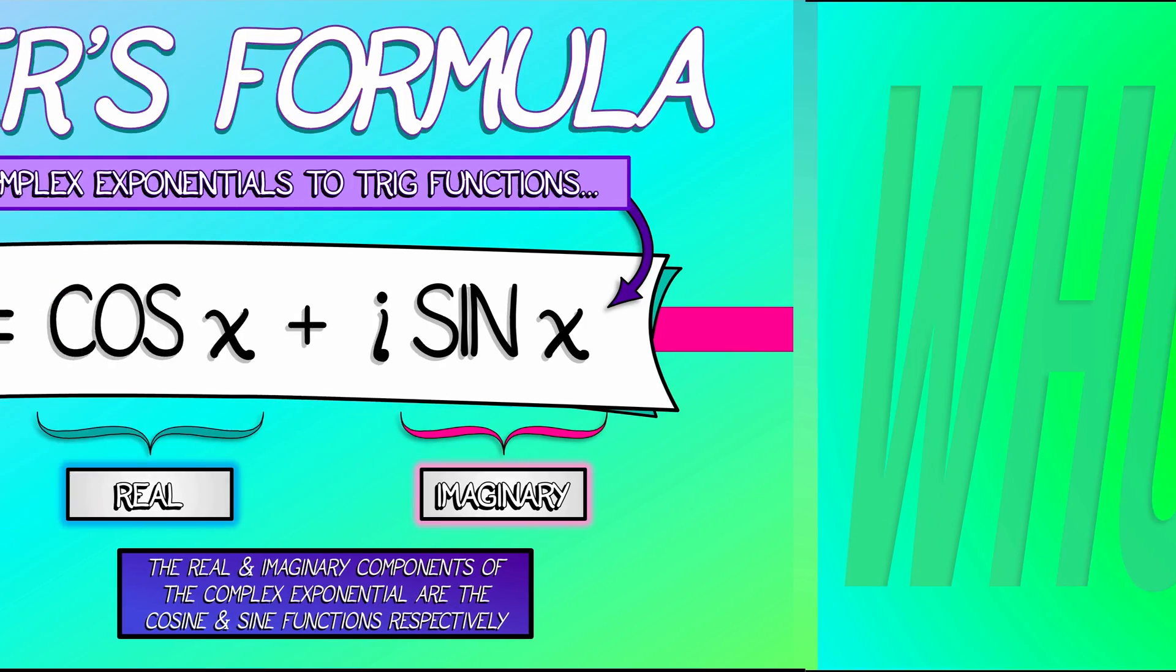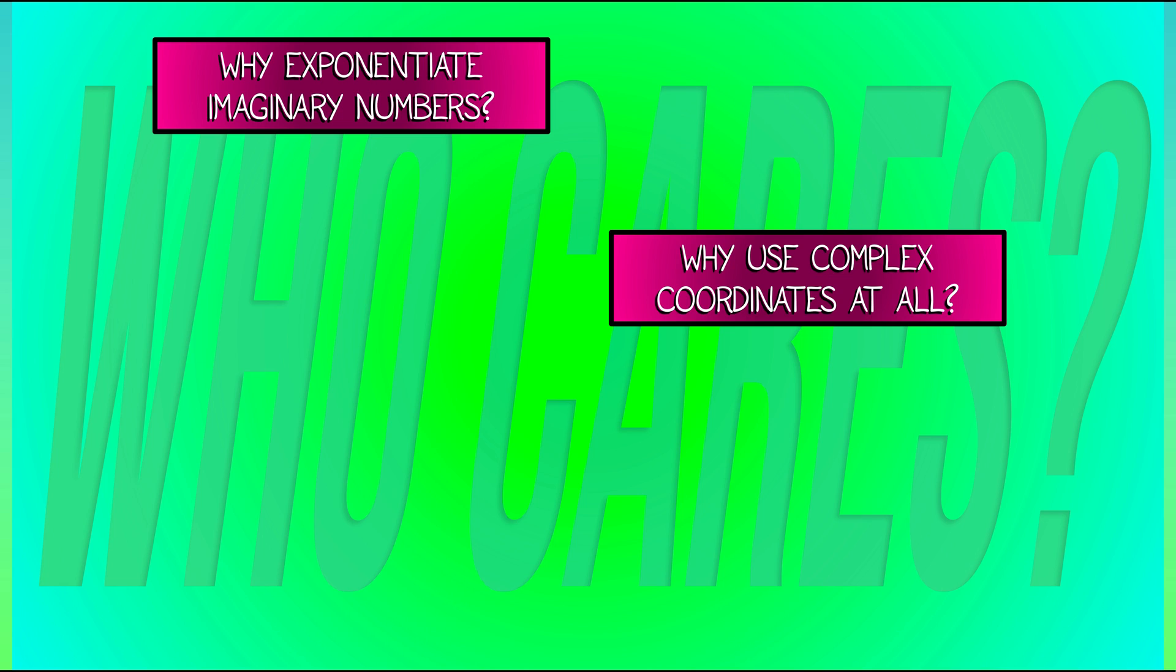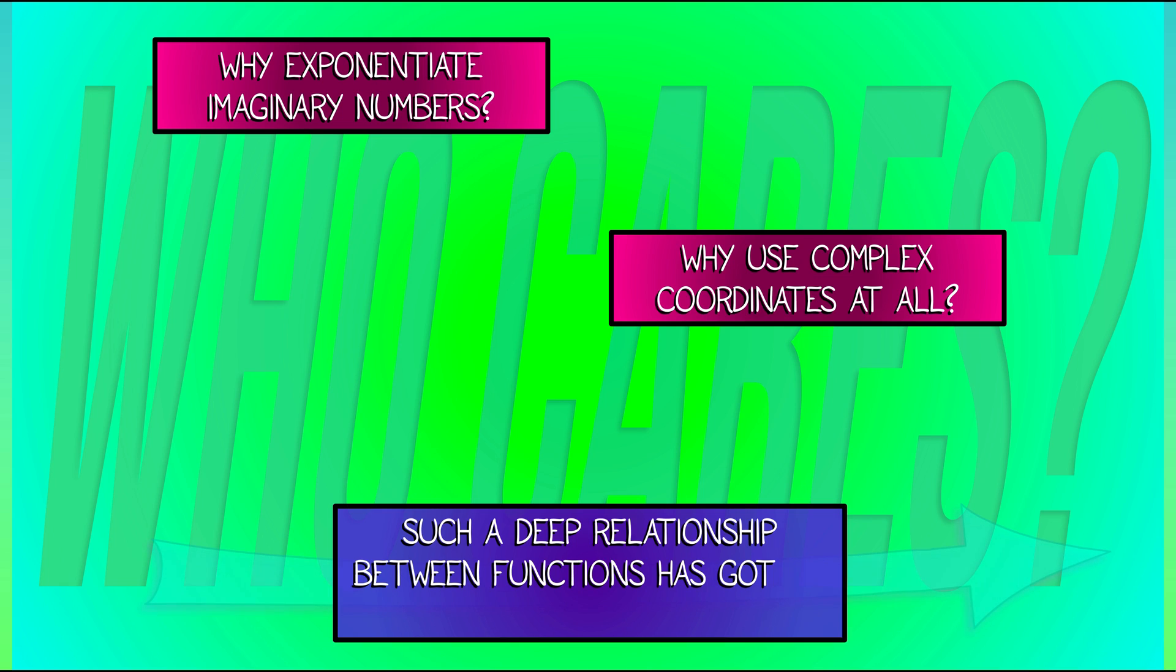What do I mean by that? Why exponentiate imaginary numbers? Who could possibly care about that? Why use complex numbers at all? Why shouldn't we just keep everything real? Well, Euler's formula is deep, and such a deep relationship between these fundamental functions has got to be useful for something. Is it? Yes, it is.